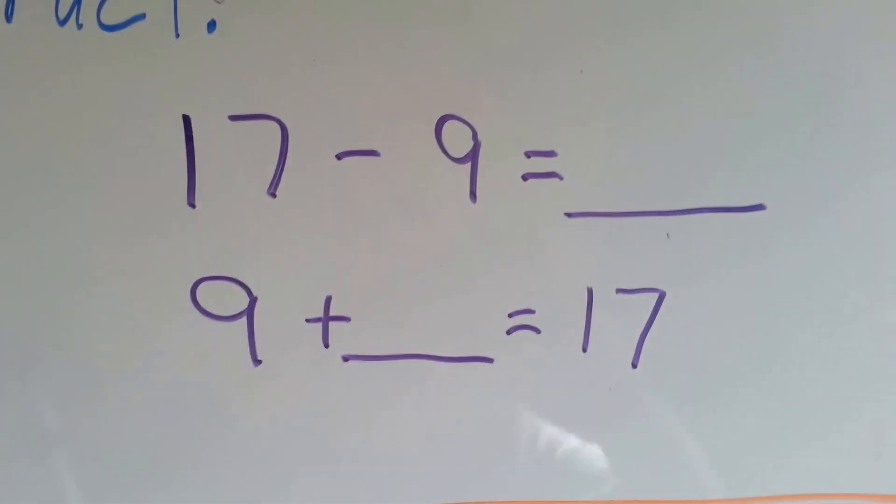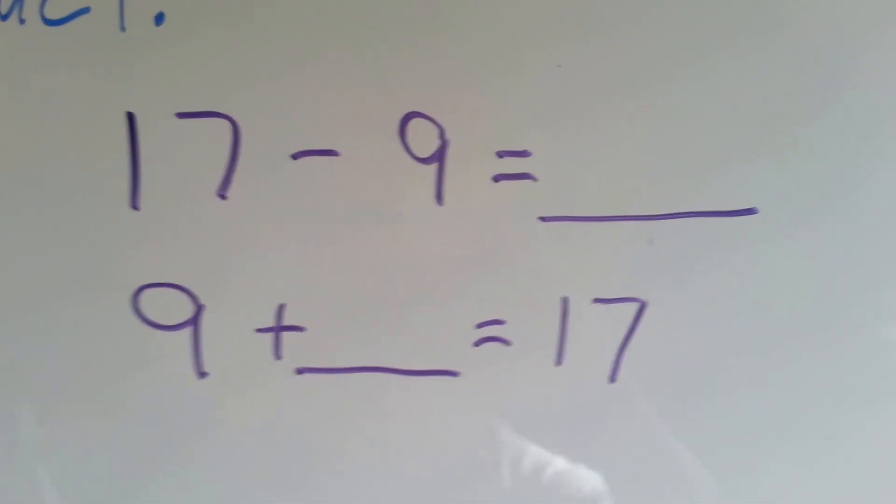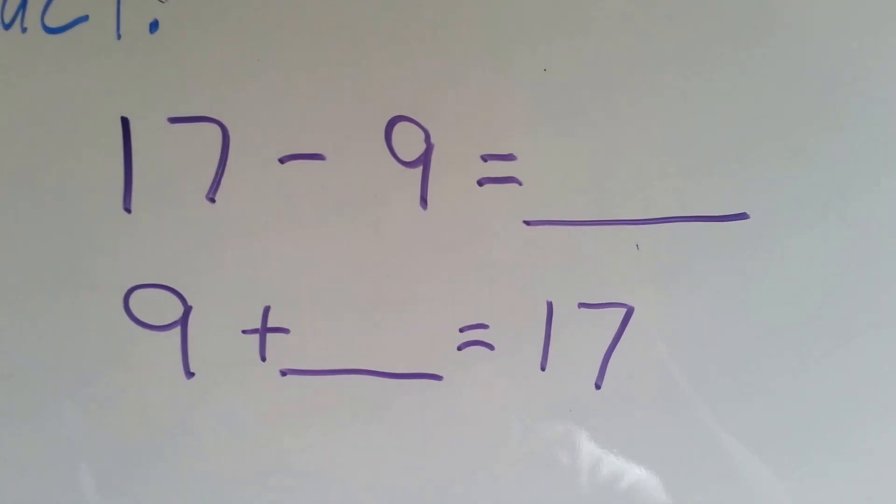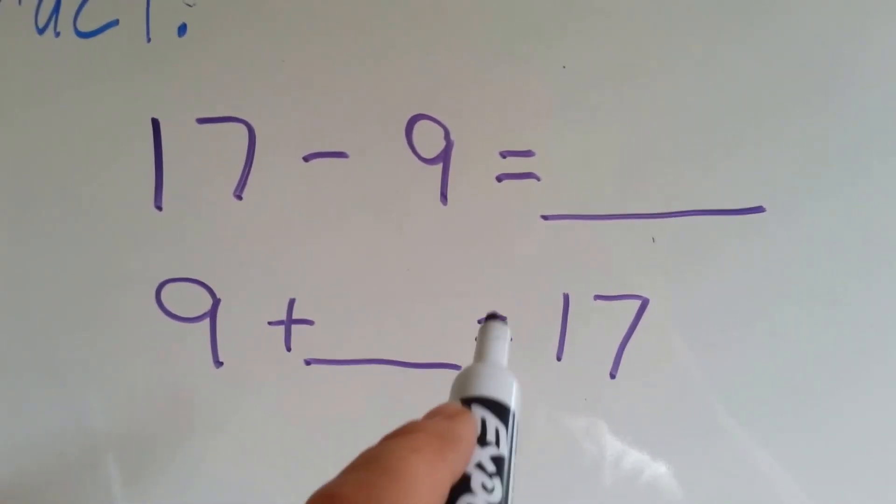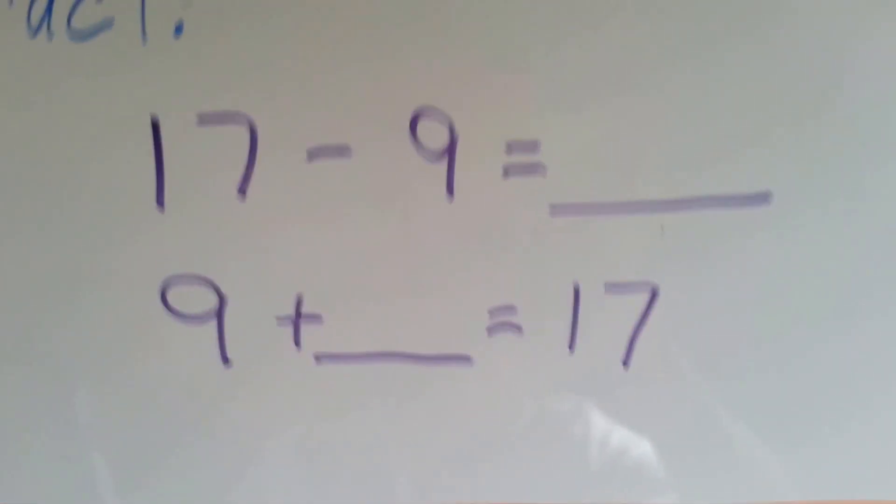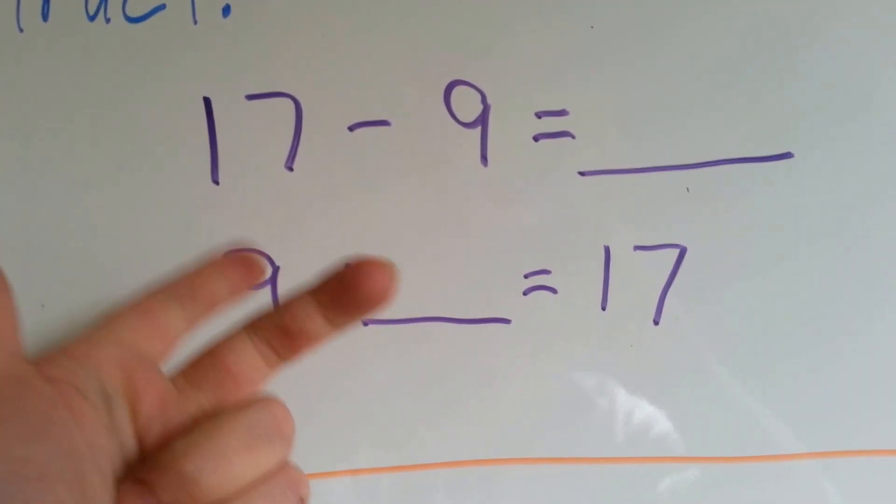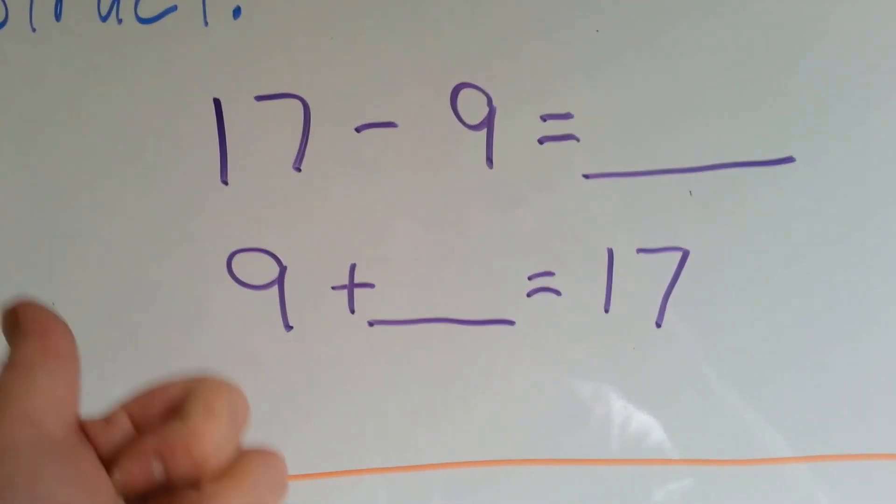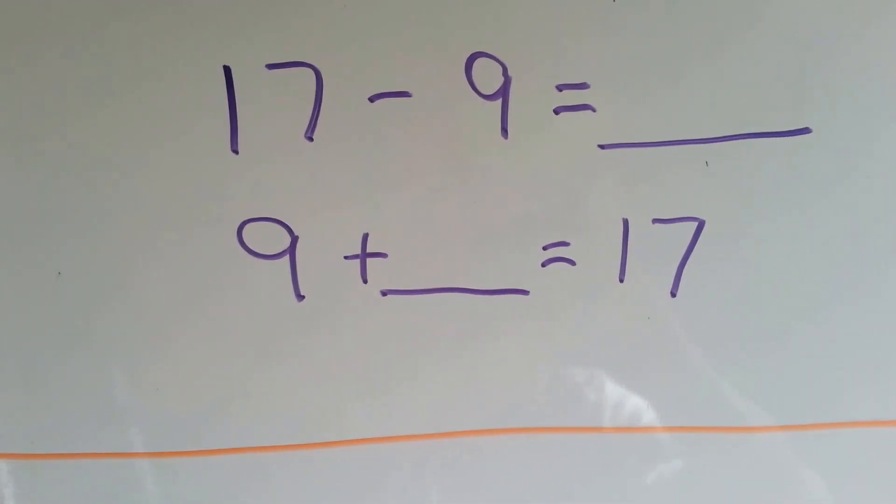Let's look at this one: 17 take away 9 equals something. Well, 9 plus something equals 17. 9, 10, 11, 12, 13, 14, 15, 16, 17. Eight.